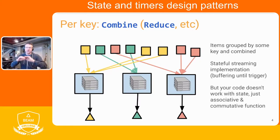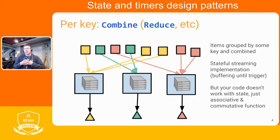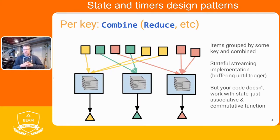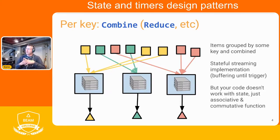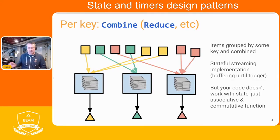Squares are inputs and triangles are outputs, and the color indicates the key you're grouping by. All the yellow squares are one key — you get those all into one machine and combine them into a yellow triangle. An important part of this in stream processing is that it's implicitly stateful — you're using state under the hood. You don't think about state; you write an associative commutative operation and the runner can parallelize it and checkpoint state. But there is some state involved because you have to wait for all elements for a particular key to arrive.